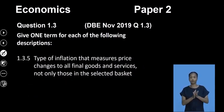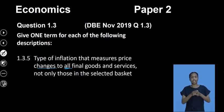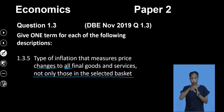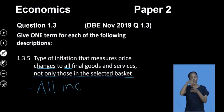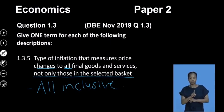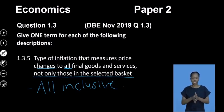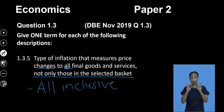Question 1.35: the type of inflation that measures price changes for all final goods and services, not only those in a selected basket. This eliminates types of inflation that only look at selected baskets. This type of inflation is called all-inclusive inflation — it looks at all final goods and services, not just selected goods. Remember to revisit your inflation topics — it is a very important area for the exam.